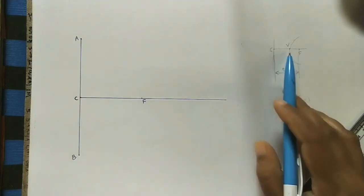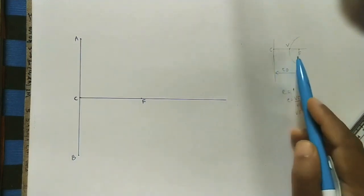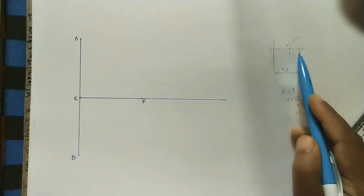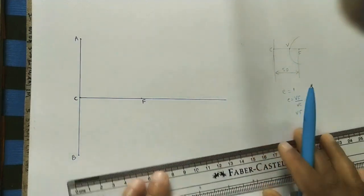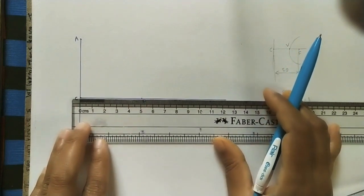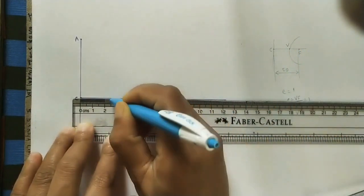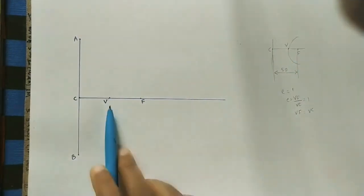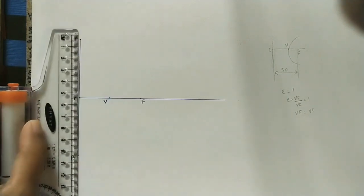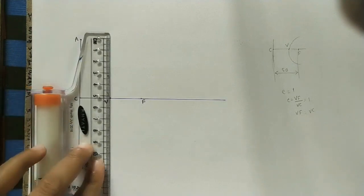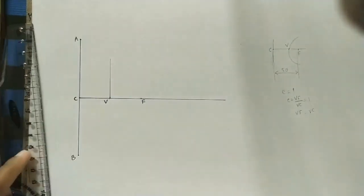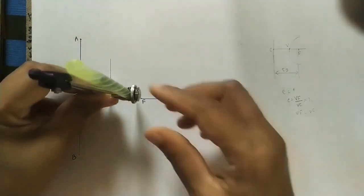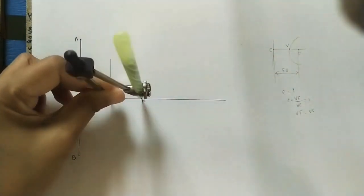This is the F point. Now mark the V point — as we know V is the midpoint of CF. So from C take 2.5 cm: CV equals 2.5 and VF is also 2.5, so the total is 5 cm. Mark this point as V. After getting the V point, draw a vertical line through V. Using the roller scale, mark the VF distance and draw an arc here.